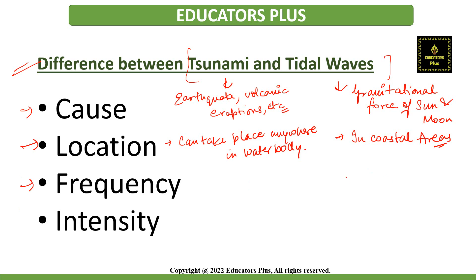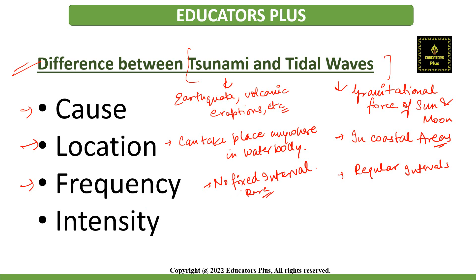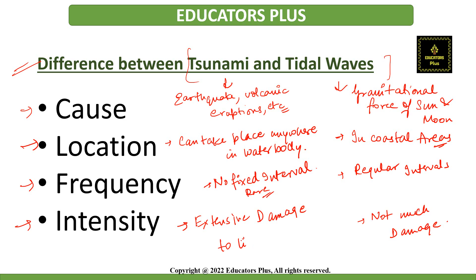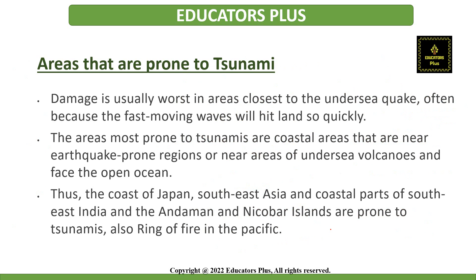In terms of frequency: tidal waves take place at regular intervals, whereas tsunamis have no specific time and can occur at any time if favorable conditions exist. However, tsunamis are very rare compared to tidal waves. In terms of intensity: tidal waves usually do not cause much damage and affect only coastal areas, whereas tsunamis can travel long distances and cause extensive damage to life and property.